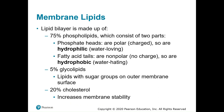The lipid bilayer is made up of about 75% phospholipids — we have the phosphate heads and the fatty acid tails. Five percent of the lipid bilayer is glycolipids: glyco meaning sugar, lipids meaning fats — these are lipids with sugar groups on the outer membrane surface facing the extracellular fluid. Cholesterol makes up the rest and increases membrane stability.